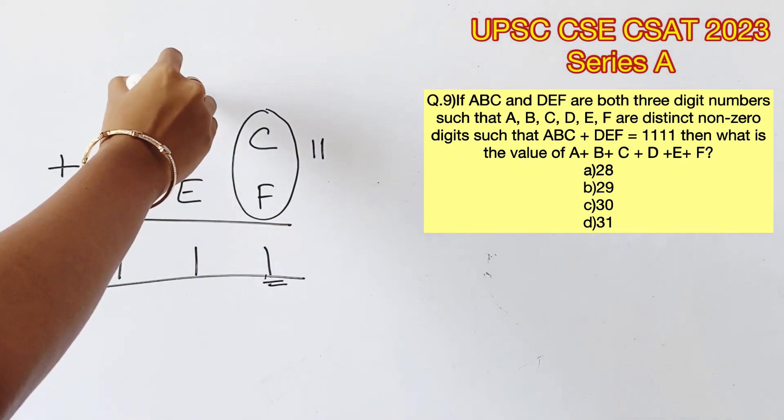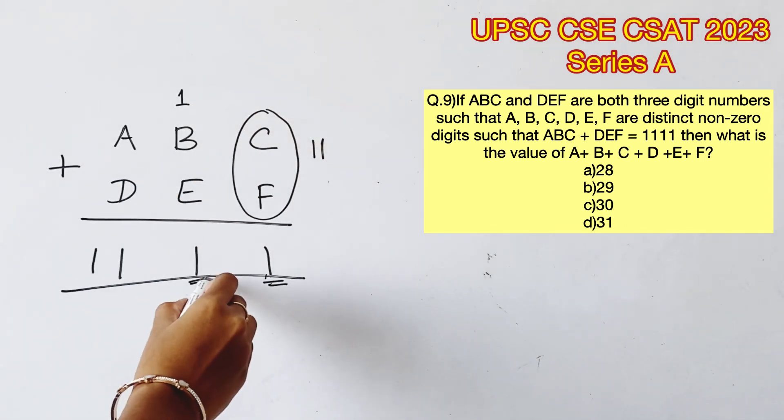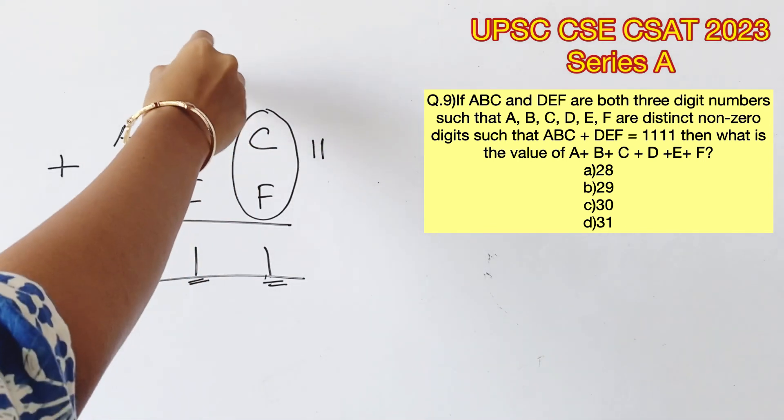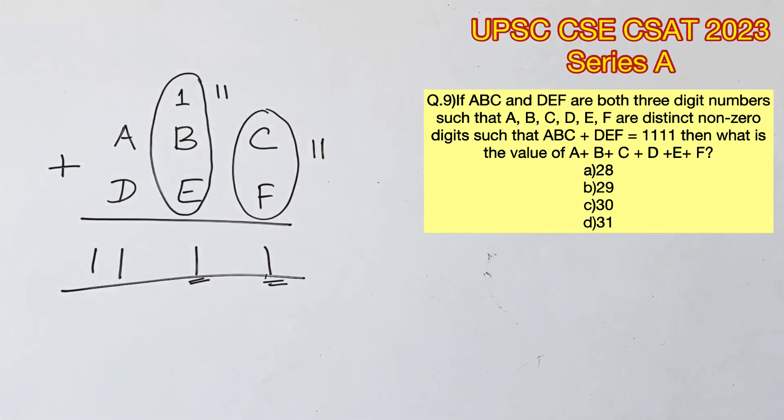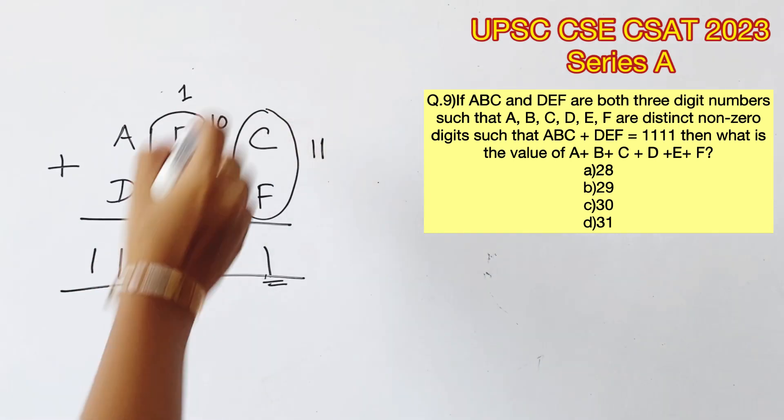Now the tens place is also filled with 1, which means the addition of all these three together should give us a sum of 11. Since we have a 1 carried over already, B plus E should give us a sum of 10.